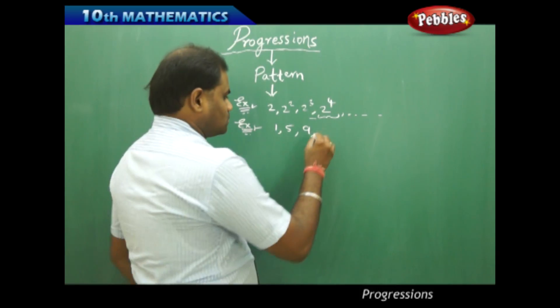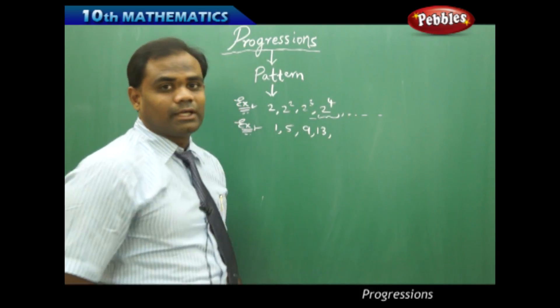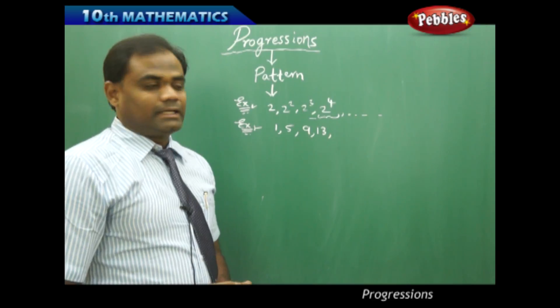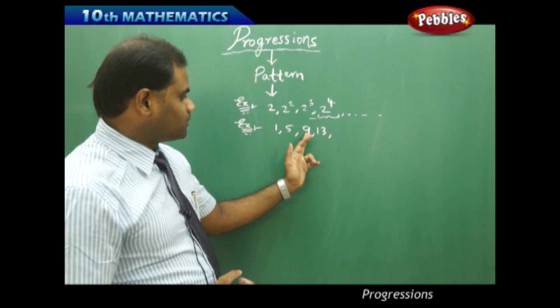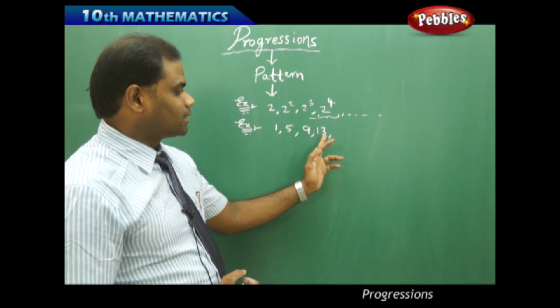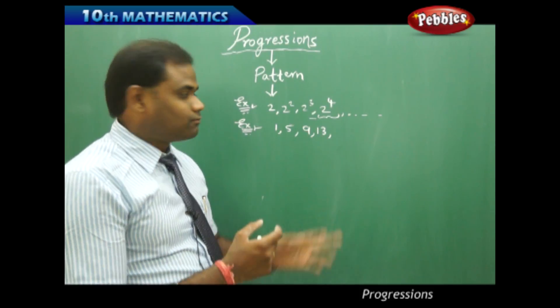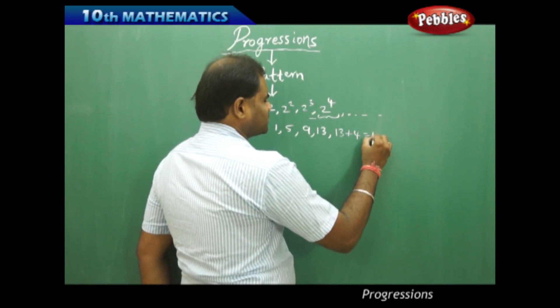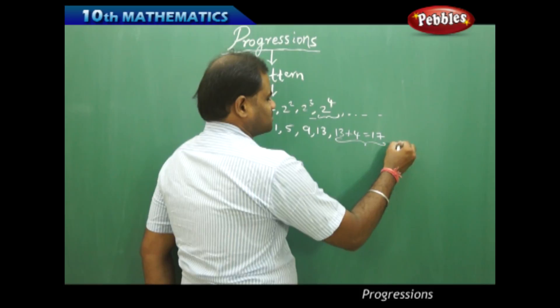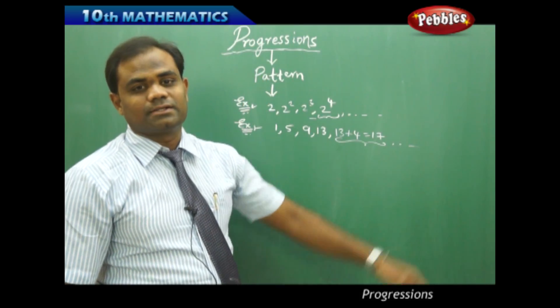Then I would like to know the next term in this pattern. I clearly see that when I add 4 to 1 I get 5, when I add 4 to 5 I get 9, when I add 4 to 9 I get 13. Therefore when I add 4 to 13 that is 13 plus 4 equal to 17 is the next pattern followed by 21, 25 etc.